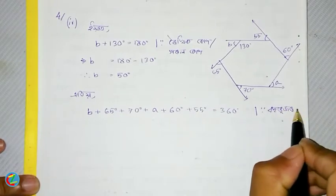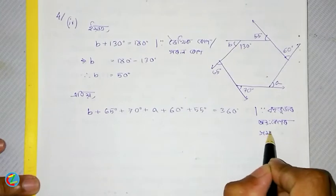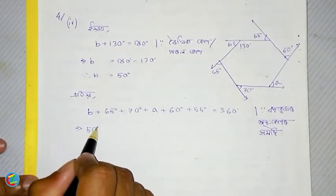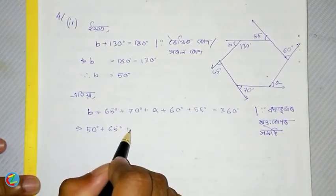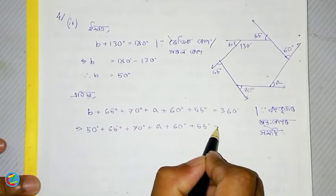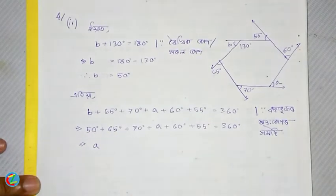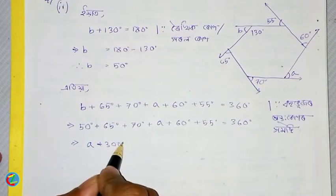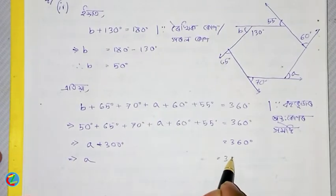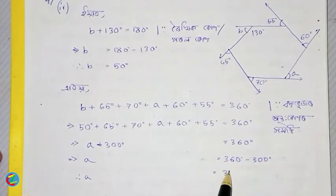We need to factor in 360. So 360 minus 300 equals 60 degrees.